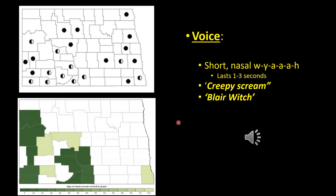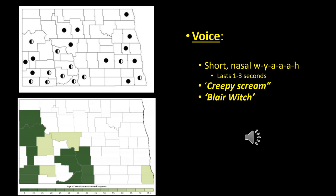Woodhouse's toads scream, and it can be very off-putting if you're camping in the spring and don't know what you're listening to. While the other toads had a melodic trill, this is really much more of a scream. It's this short nasal 'wah' — about two to three seconds in length. Since it's a large toad, it can get quite loud, and in the middle of the night while camping it could be slightly alarming.